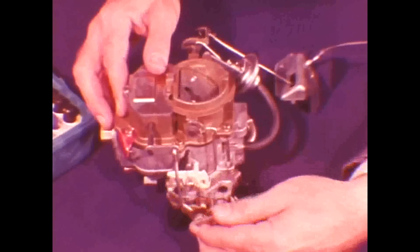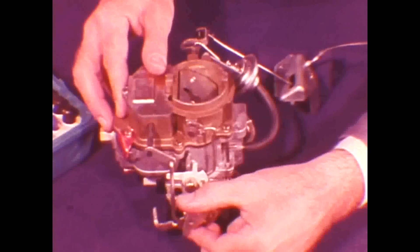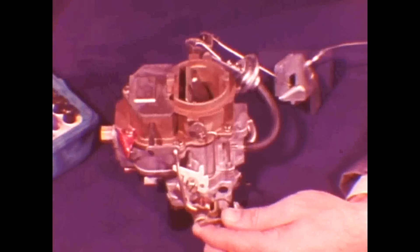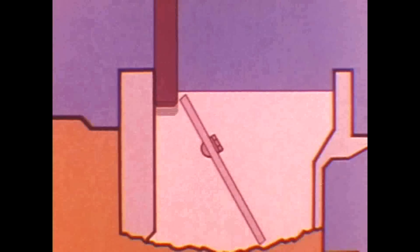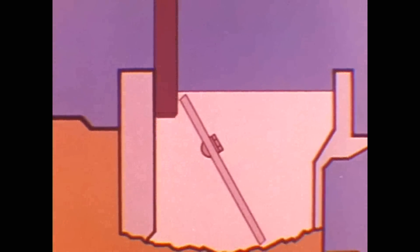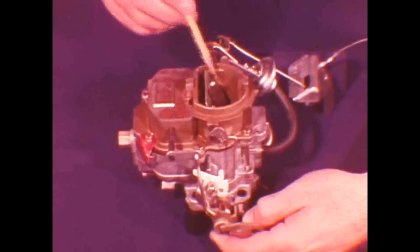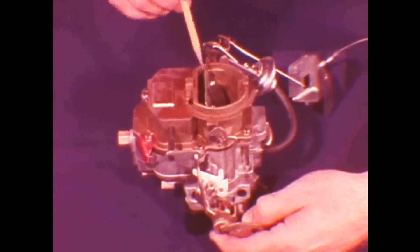Now let's look at how to check the choke unloader setting, often referred to as wide open kick. To do this, hold the throttle valves in the wide open position. This tang kicks the fast idle cam upward, partially opening the choke valve. Using the proper gauge, check the clearance at this point. If the gauge falls through the gap without any drag, or if it cannot be inserted without forcing the choke valve to open, bend this tang up or down as necessary. This unloader setting must be correct so that extra intake air can enter the cylinders during wide open throttle cranking to help clear an engine stall condition caused by momentary over rich mixtures.